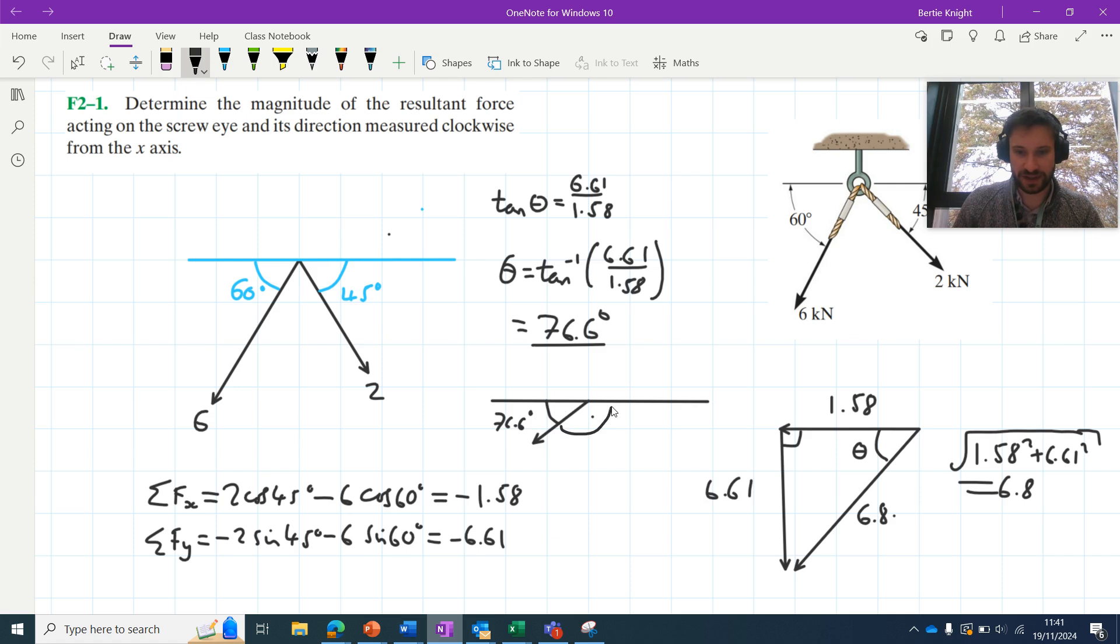What it's asking for is this angle measured clockwise from the x-axis. So just subtracting 76.6 from 180, that gives us 103.4 degrees. And these are our two answers: 103.4 degrees and magnitude of 6.8 kilonewtons. Awesome. So if you have any questions or comments feel free to leave them down in the comment section below. Otherwise, thank you very much for watching.